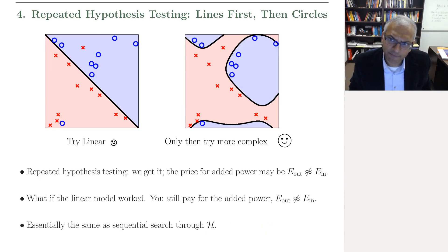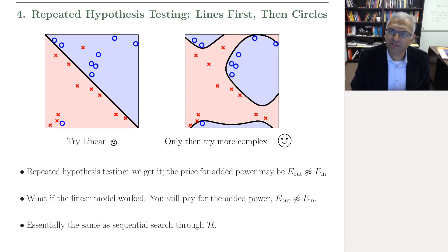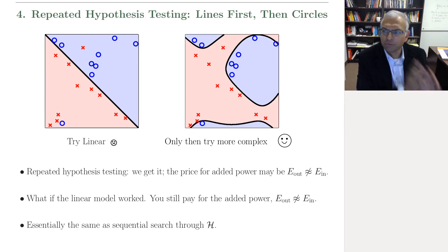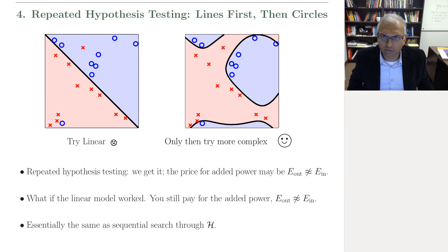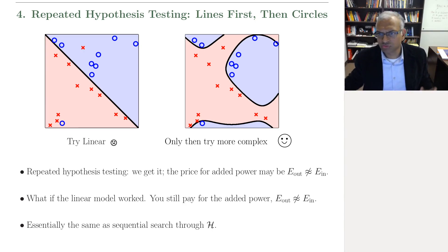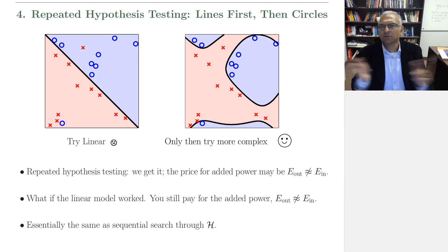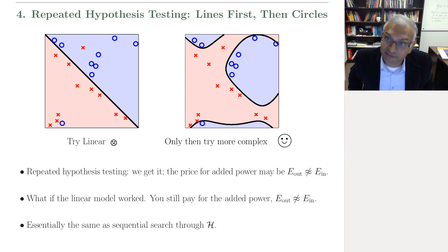Question 4 is also interesting — this is sometimes called repeated hypothesis testing. You try a simple model like lines first; it fails. So you try a more complex model like circles; it succeeds. Most practitioners know that when you do repeated hypothesis testing and try circles, you have to pay the price for this added power. You may have lost the E_in versus E_out generalization guarantee. So what's wrong with this? You're paying the price when you do this repeated hypothesis test.